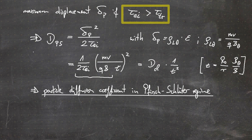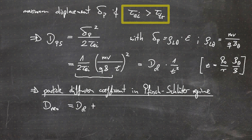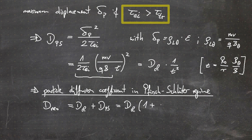The neoclassical diffusion coefficient D_neo is often written as the sum of the classical diffusion coefficient plus the Pfirsch-Schlüter diffusion coefficient. Since we could express the Pfirsch-Schlüter diffusion coefficient in terms of the classical diffusion coefficient, we can write D_neo = D_classical times (1 + 2/iota-bar²).